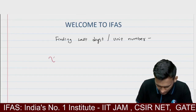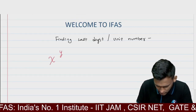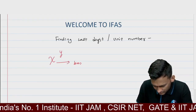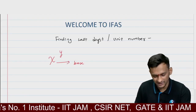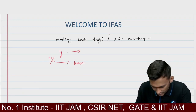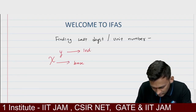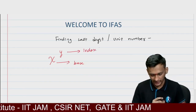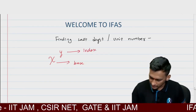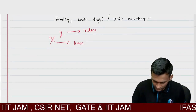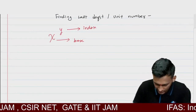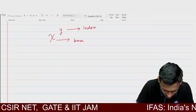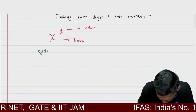Suppose you are given the number x raised to y. Here x is called the base number and y is called the index of this number. Now let's try to understand what is cycle length.